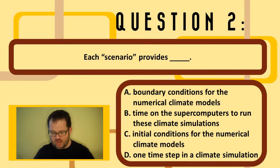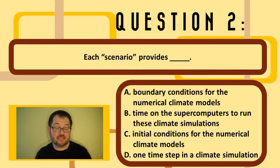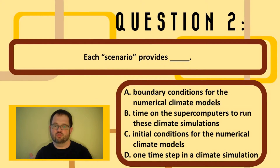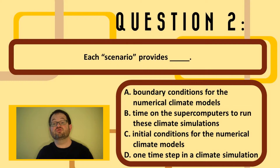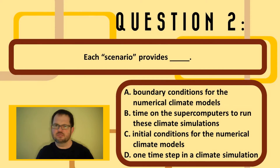When we work out these scenarios, what we're doing is determining things like the amount of carbon dioxide in the Earth's atmosphere 20 years from now in the future, 40 years from now in the future, whatever. And so that we can use that as boundary conditions when we're driving the model at that point in its integration.